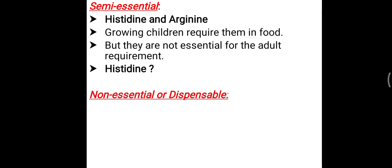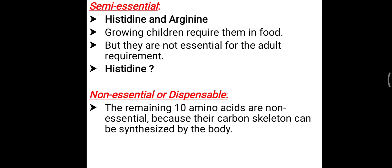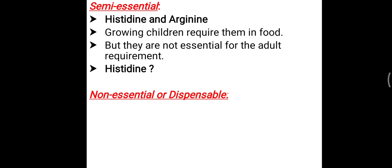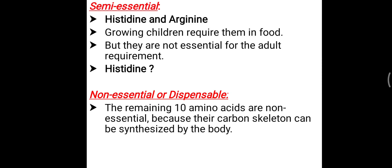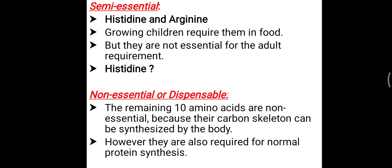In total: eight essential amino acids, two semi-essential (arginine and histidine), and the remaining ten are non-essential or dispensable amino acids. Non-essential does not mean they are not needed — they are required, but if essential and semi-essential amino acids are provided, the body can synthesize these ten. Their carbon skeletons can be made by the body through transamination and other reactions, as needed for normal protein synthesis.